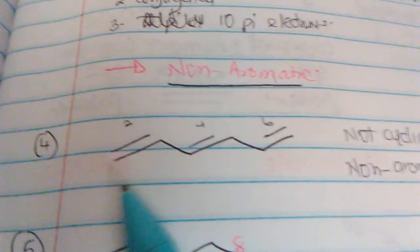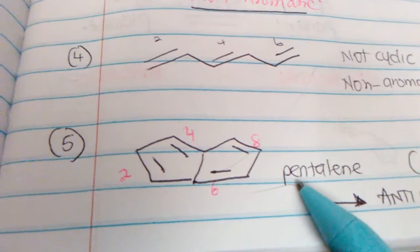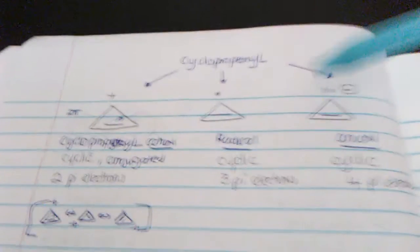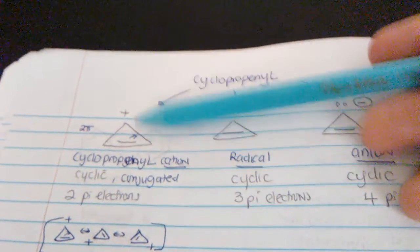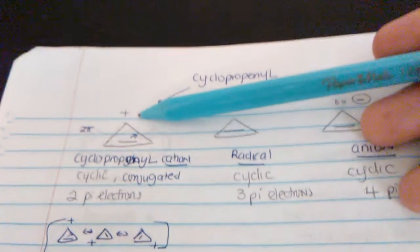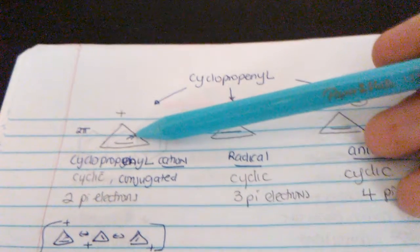A non-cyclic compound is not aromatic. A compound with 8 pi electrons is anti-aromatic. The cyclopropenyl cation has a positive charge, contributing 1 bond — that's 2 electrons — and with 4n + 2 where n = 0, it's aromatic.